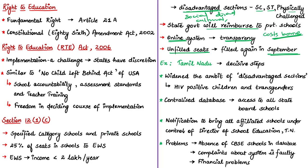They state that Tamil Nadu has always been at the forefront of educational progress in the country. Tamil Nadu has made certain decisive strides in implementation with respect to Section 12.1C because the state government has widened the ambit of disadvantaged sections, including HIV positive children and transgenders along with Scheduled Castes, Scheduled Tribes, and physically challenged persons in the disadvantaged group definition. This is a commendable decision as many vulnerable children will be benefited, and it shows the state's commitment to not discriminate and to respect the third gender.